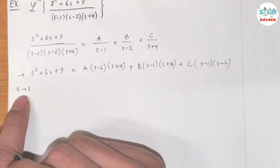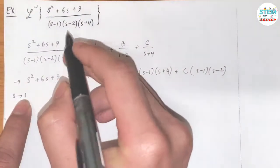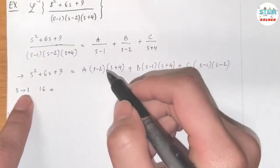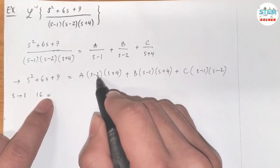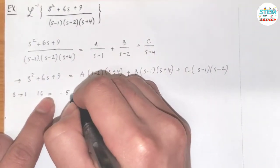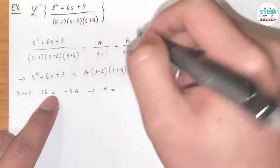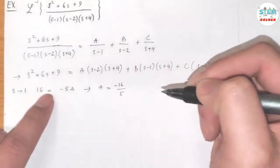Let's do it for 1 first. Let x approach 1. On the left side, I have 1² plus 6 times 1, which is 7, plus 9 is 16. Let x equal 1 on the right side. I have 1 minus 2, which is negative 1, negative 5A. 1 minus 1 is 0. So I get A equals negative 16 over 5 right away.